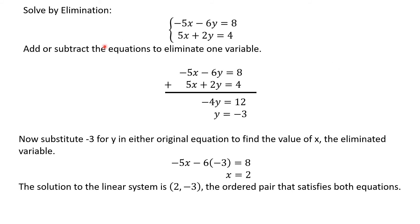Now solve by elimination. We have negative 5x minus 6y equals 8, and the second equation: 5x plus 2y equals 4. Add or subtract to eliminate one variable. The easier to eliminate is negative 5x and 5x — we add them, since they have opposite signs, and they become 0.